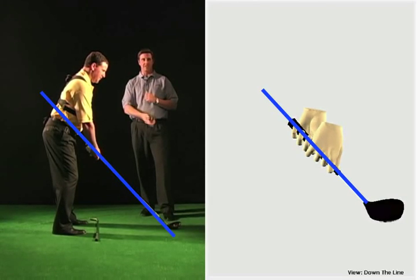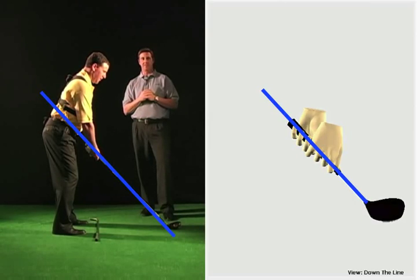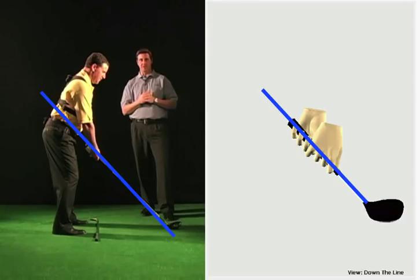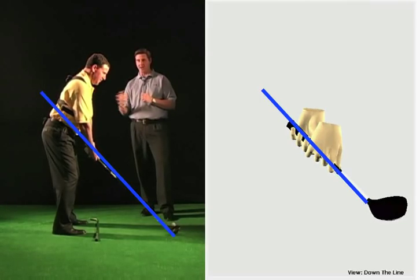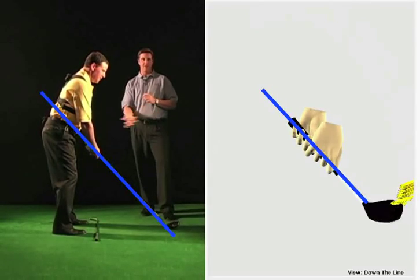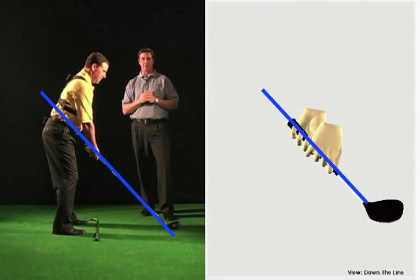Now what that's gonna allow you to do is actually see the path of John's golf club. So you've got the video on the left. We've now got the club tracer on the right. So if John swings it back to the inside, and then over the top, you can now see the path or the orientation of that 3D animation.